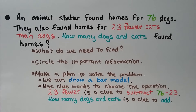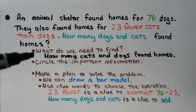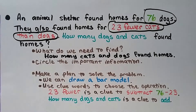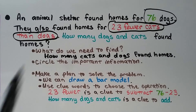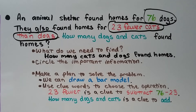An animal shelter found homes for 76 dogs. They also found homes for 23 fewer cats than dogs. How many dogs and cats found homes? We need to find how many cats and dogs found homes. We circle the important information: there were 76 dogs and there were 23 fewer cats than dogs. We make a plan to solve the problem — we can draw a bar model, and clue words tell us the operation. '23 fewer' is a clue to subtract.